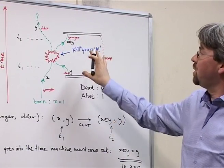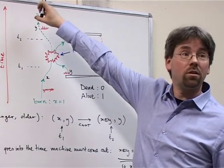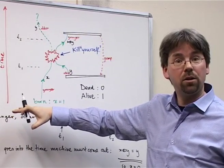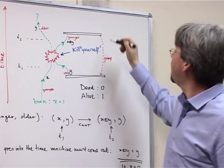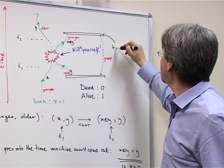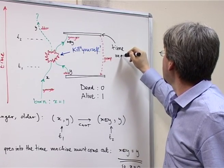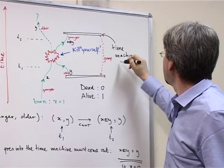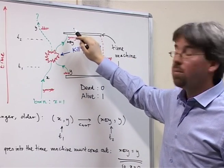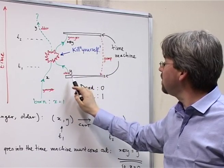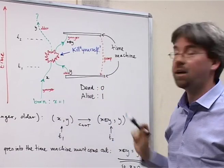So this is our time machine. Time runs in the vertical direction, so lower is earlier, and later is higher up on the board. And here is our time machine. It consists of two parts. The bit that you go in, and then you pop out earlier, so lower, out of this part of the time machine.